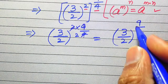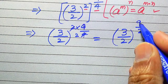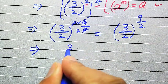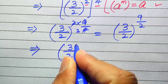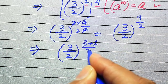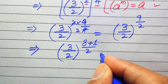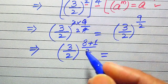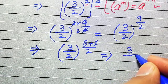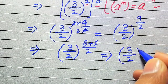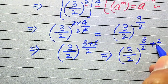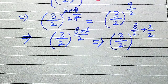We focus on the exponent of the numerator term, which is 9. We break 9 as 8 plus 1, so the exponent becomes (8 + 1) divided by 2. We then break this fraction, writing it as (3 divided by 2) to the power of 8 over 2, plus 1 divided by 2.